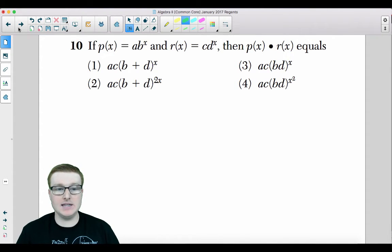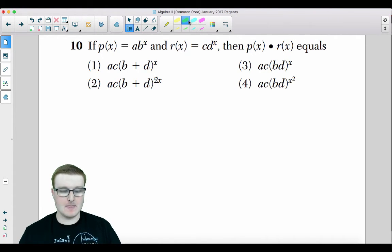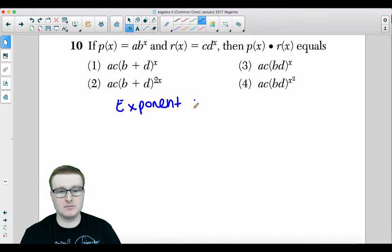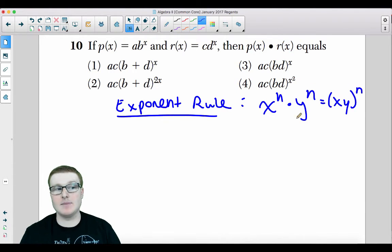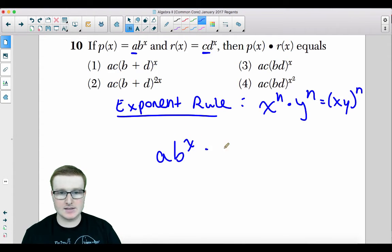If P(X) equals AB to the X and R(X) equals CD to the X, then P(X) times R(X) equals what? So you need to know this exponent rule. Very important stuff. The exponent rule that you need to know is X to the N times Y to the N is equal to XY to the N power. So if you take X, in this case, which is A, and Y, which is C, what you could do is you could rewrite AB to the X times CD to the X like this. You keep the A's and the C's together, and you keep the B raised to the X and D raised to the X together because they have that X attached onto them.